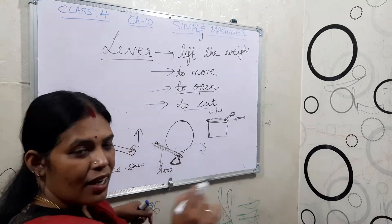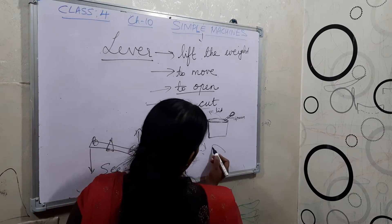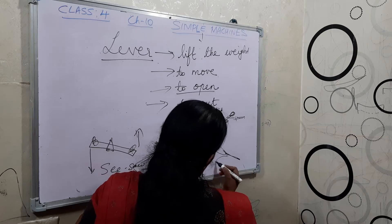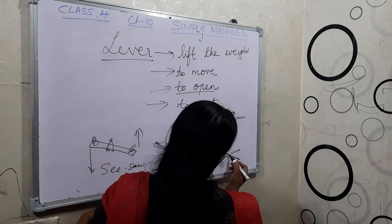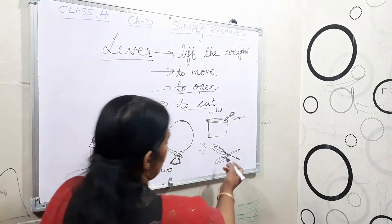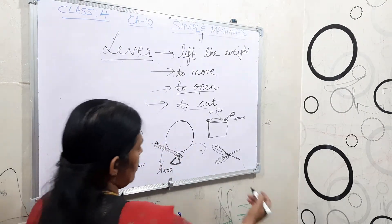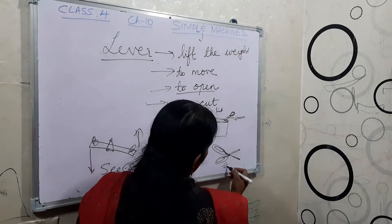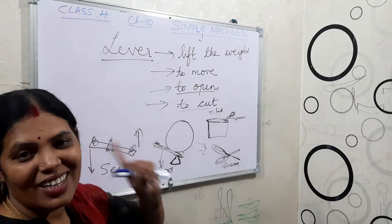To cut things — see, scissors. The scissor acts as a lever. When we give the force, the edges come forward and then you can cut the things. So here the scissor acts as a lever.